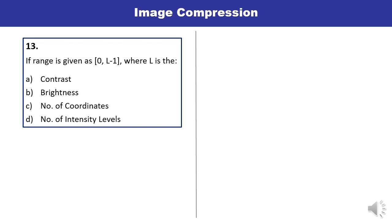Question 13: If range is given as 0 to L minus 1, here L refers to what? L is actually the number of intensity levels. So D is the correct answer.